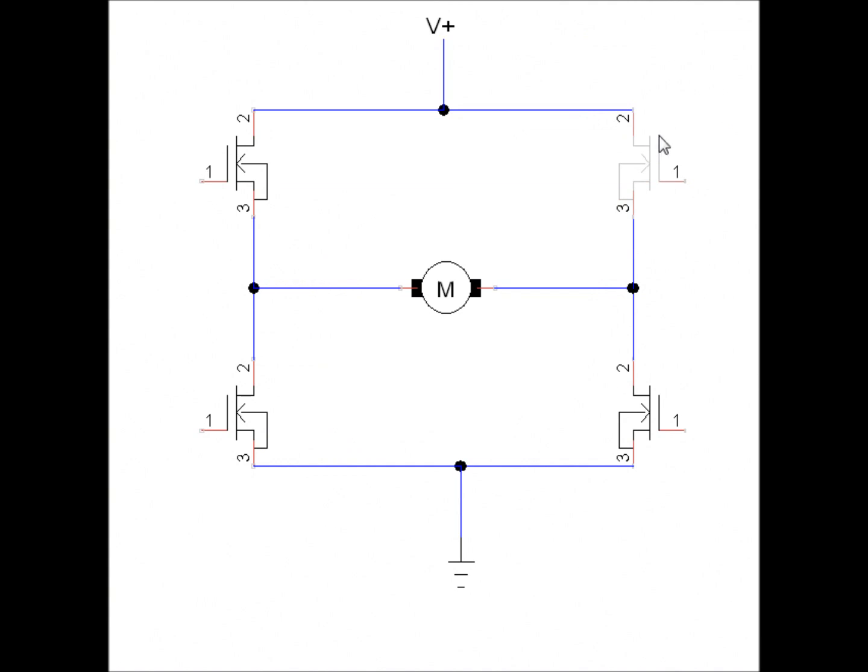For example, this drain and this drain obviously are going to be at the same potential, but they won't be at the same potential as this drain and this drain, so you're going to cause short circuits and things are not going to work right.